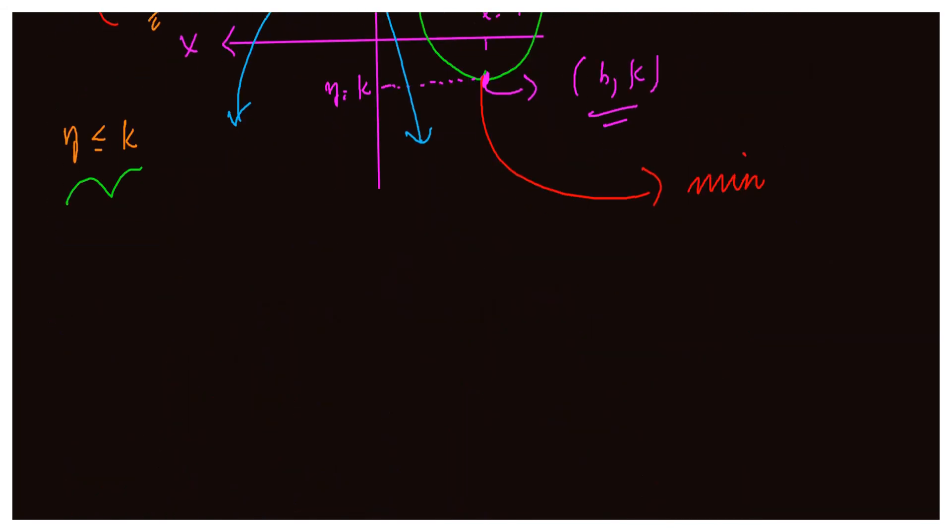So let's now find the value of h and k for the given function. The function f(x) is equal to 1 + 8x - 2x².